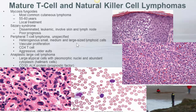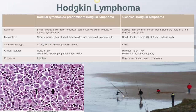Anaplastic large-cell lymphoma is composed of large atypical cells with polymorphic nuclei and abundant cytoplasm, so-called hallmark cells, as shown in the image on the bottom left. The image on the bottom right shows lymphoid cells with typical kidney-shaped nuclei. CD30 and ALK protein are immunophenotyping features of anaplastic large-cell lymphoma. This lymphoma is a common lymphoma in children.